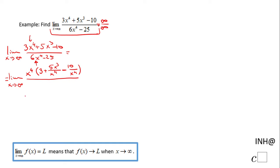And the same thing for the denominator we're going to factor out x to the 4th power and we have 6 minus 25 over x to the 4th power.